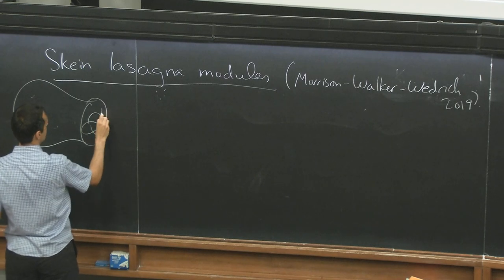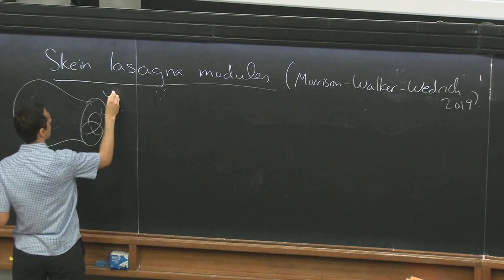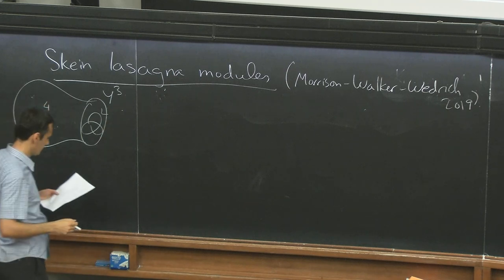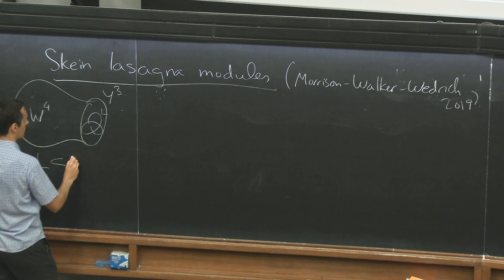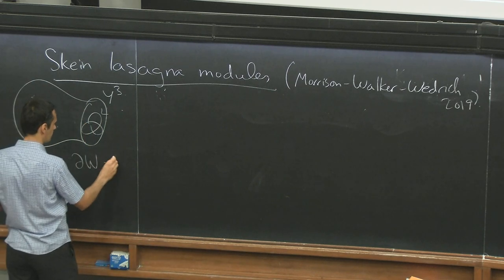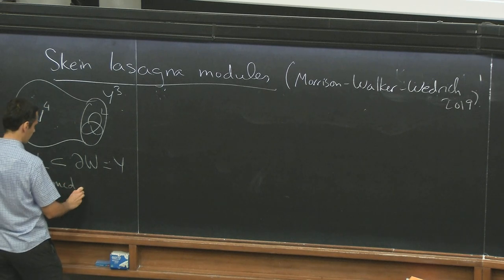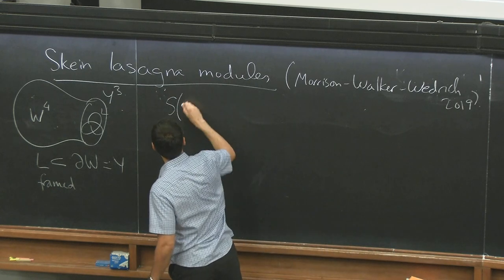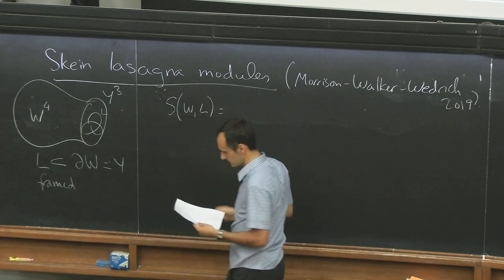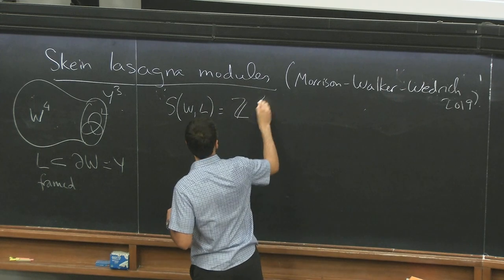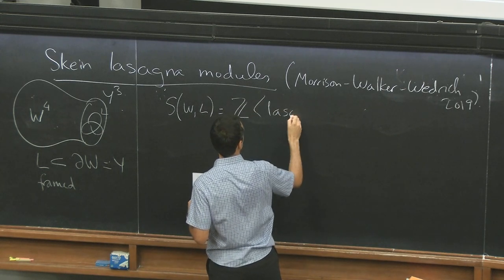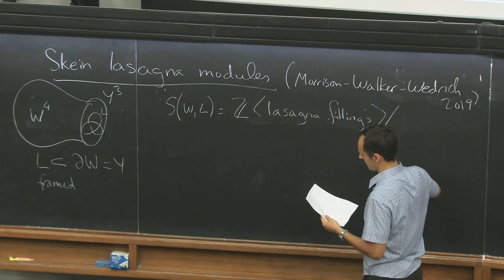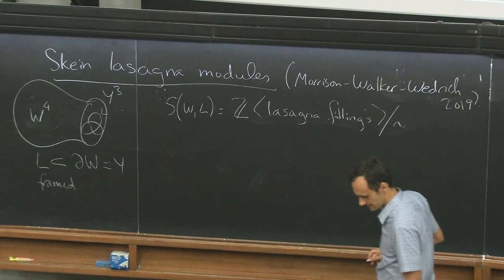And there are invariants of some link inside the 3-manifold Y, but you also have to specify some 4-manifold with boundary Y. So, the link is in W, which is Y, and it's framed. Everything is actually framed. So, the skein-lasagna module, call it SWL, is the free abelian group on lasagna fillings, modulo semi-equivalence relation. What's a lasagna filling?